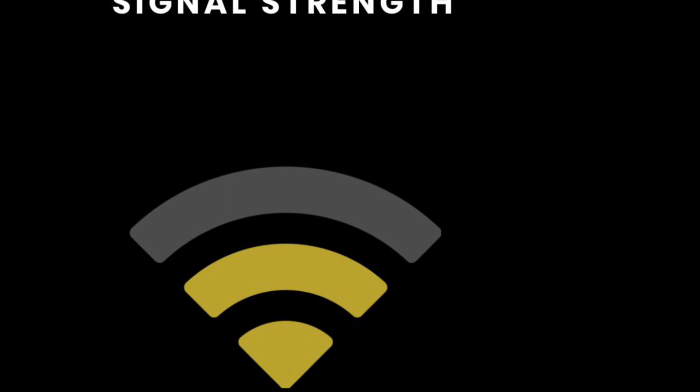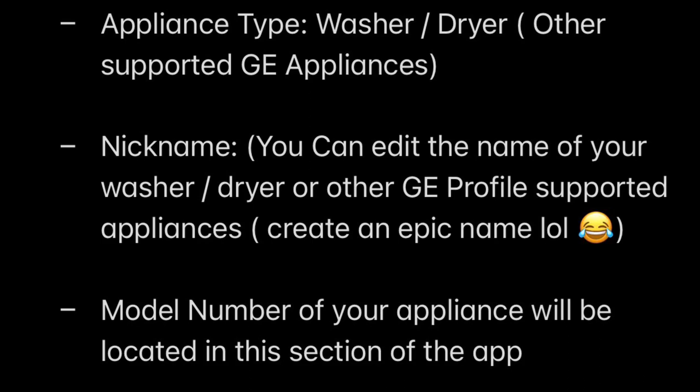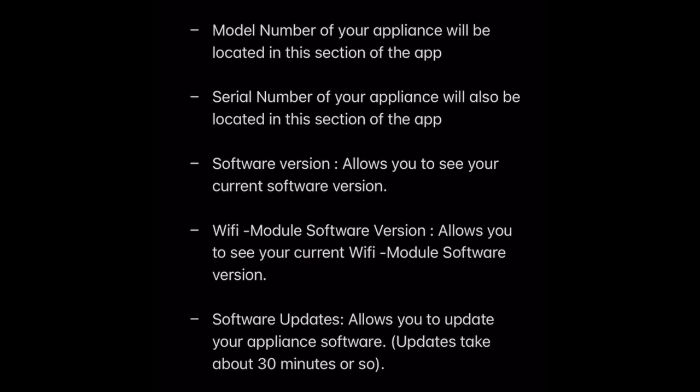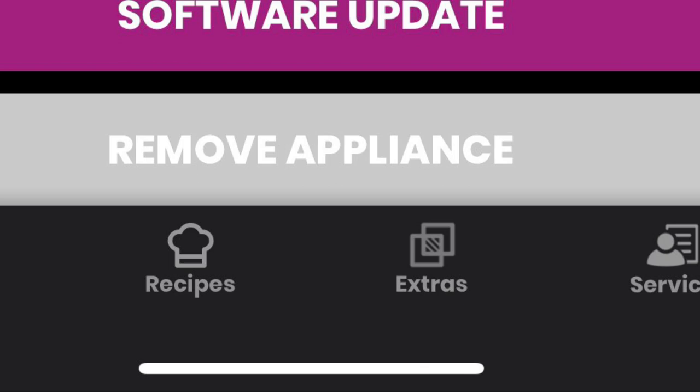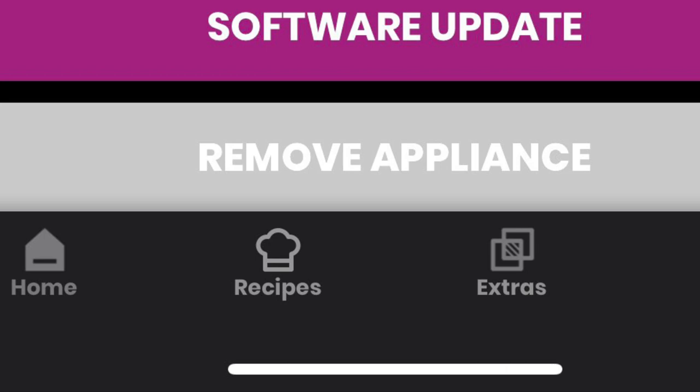Your signal strength will allow you to review your Wi-Fi connection. The product information section will have your appliance type such as the washer and dryer, you can nickname your appliance to be creative, your model number, serial number, software version, your Wi-Fi module software version, and your software updates. Towards the bottom of the product information section, you will be able to complete software updates, or you can also remove your GE Profile Washer or your GE Profile Dryer from the SmartHQ app.